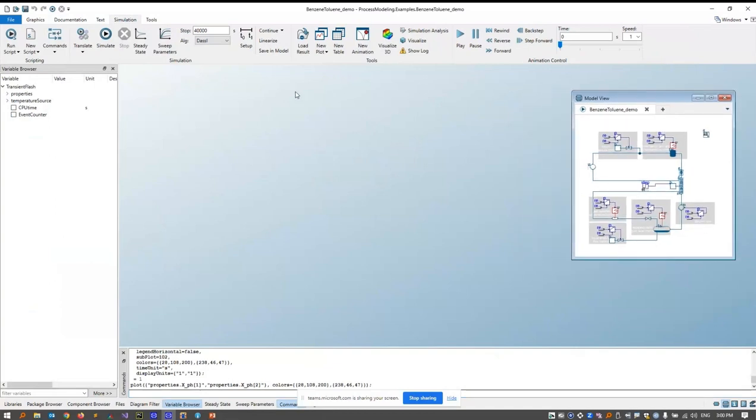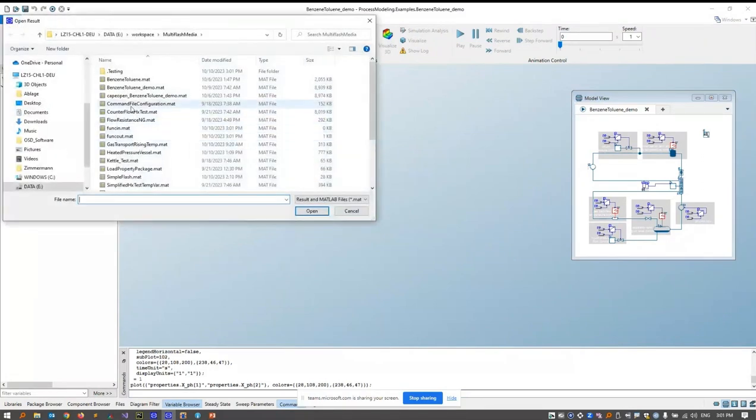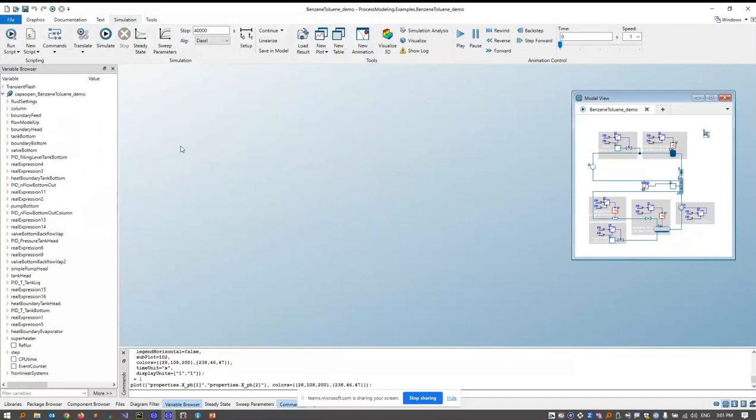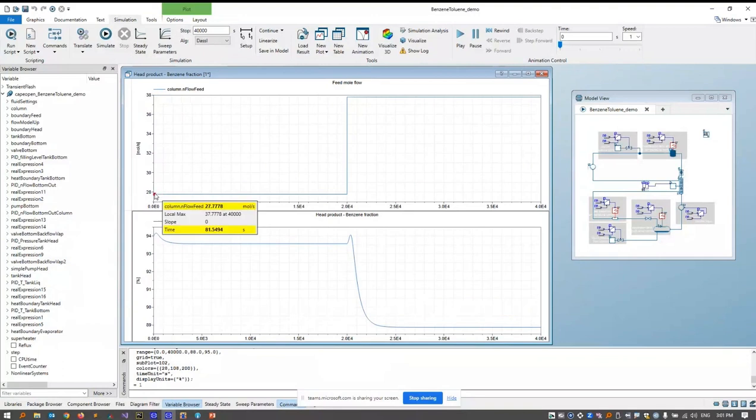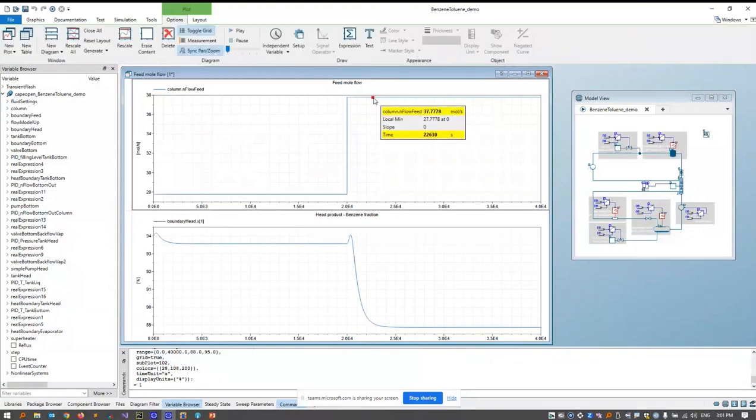Since simulation would take about two minutes, I simulated it in advance and will just load the simulation result. And again, I created a plot script that I now will execute. So here you see the mole flow rate of the feed that at the beginning is at about 28 moles per second and increases to about 38 moles per second and here's the step.